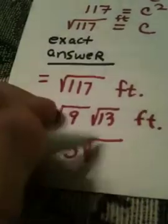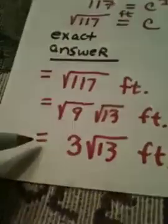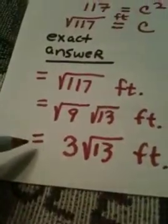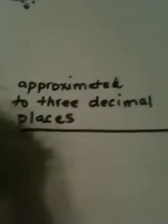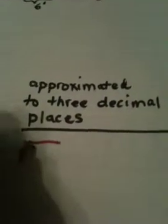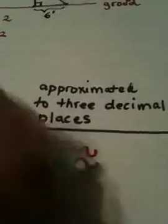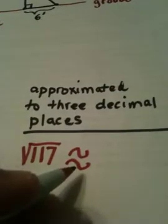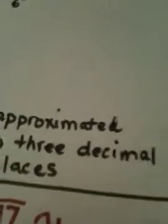Now if I want the answer approximated to three decimal places, I need to take the square root of 117 and put it in my calculator so I'm going to come out with an approximate answer. Okay, you should have your calculator.